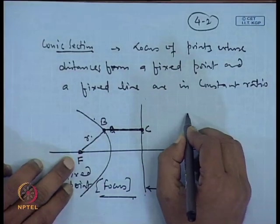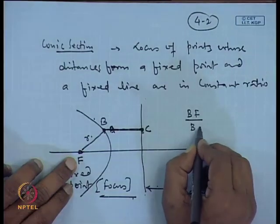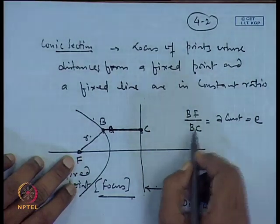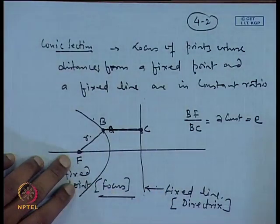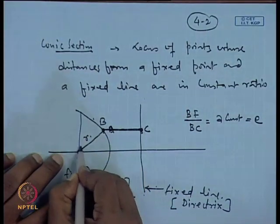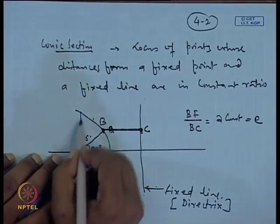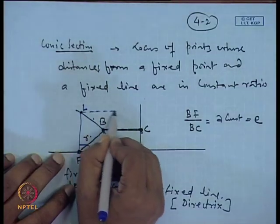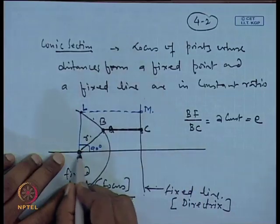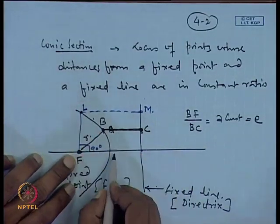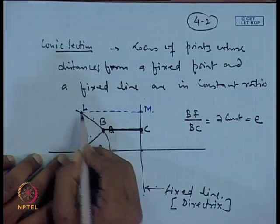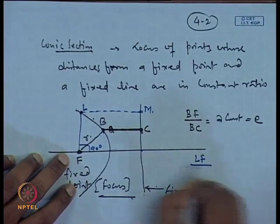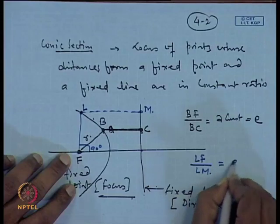This implies that B·f divided by B·c will be a constant, and this constant we write as E. Now taking another point by choosing this angle to be 90 degrees, if we choose another point and name it L, and indicate this point as M which is parallel to the directrix line, because this point also lies on the trajectory, L·f divided by L·m must also be in a constant ratio.